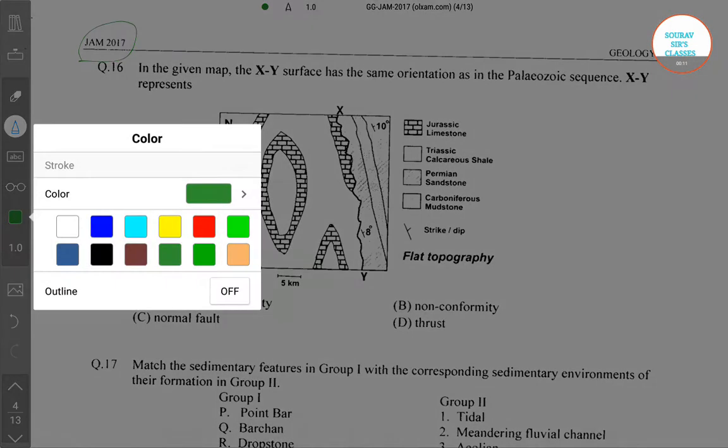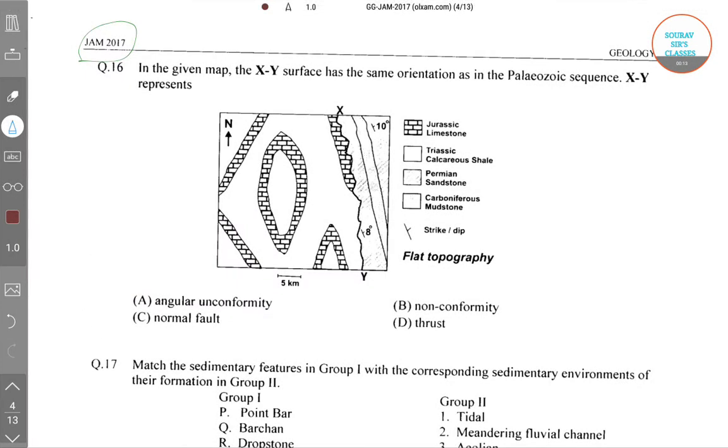In the previous video, I have done till question number 15, so I will start this video from question number 16. Here we have a map given and it is given that XY surface has the same orientation as in the Paleozoic sequence. So what does XY represent?